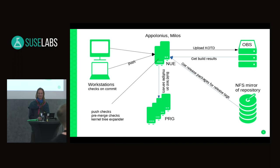If the upstream repository goes offline between when the original person committed a patch and when the branch maintainer wants to use it, there is really no other option than to bypass the commit check locally.